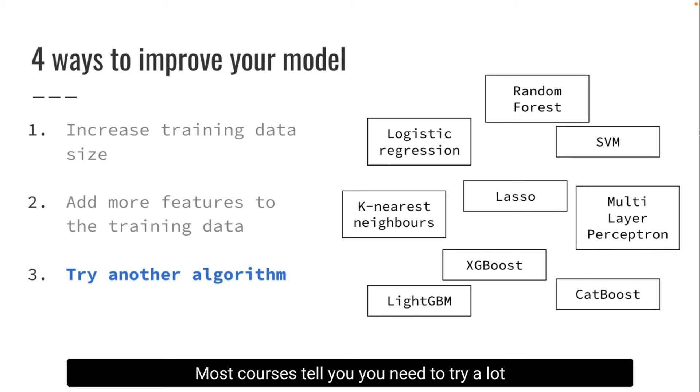Most courses tell you you need to try a lot of them and then see what works. In practice, let me tell you something: when you work with tabular datasets, almost always the best model is going to be a boosting algorithm, which means it's going to be either XGBoost, LightGBM, which is a variation of XGBoost, or CatBoost, which is a further improvement over these two. So you can experiment a lot if you want, but what I recommend is once you have built a good training dataset, try XGBoost, LightGBM, or CatBoost. If none of these three things works, it's very unlikely that any other algorithm will work.